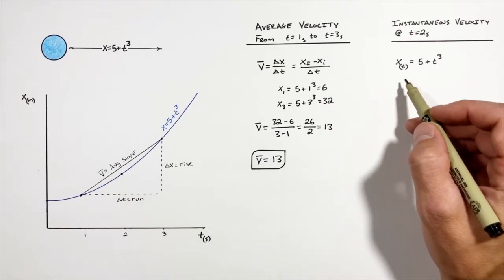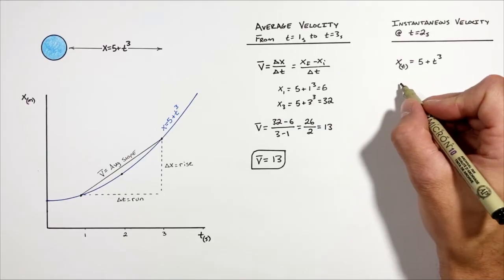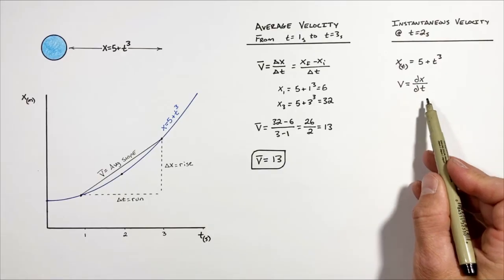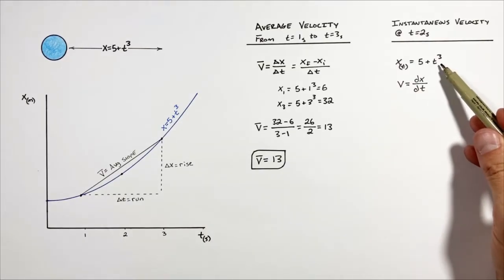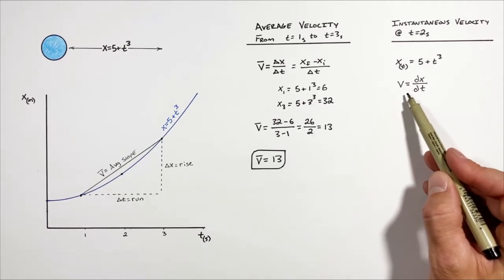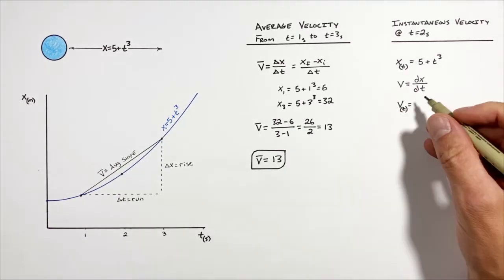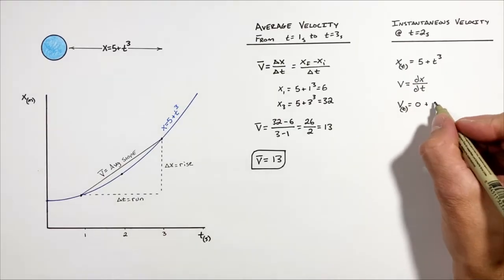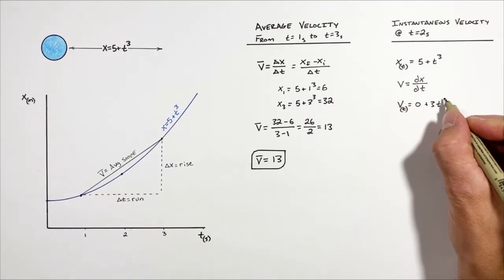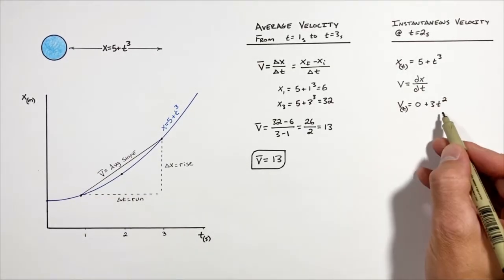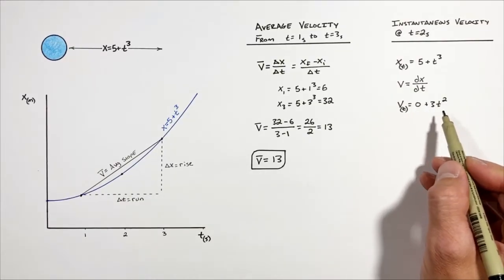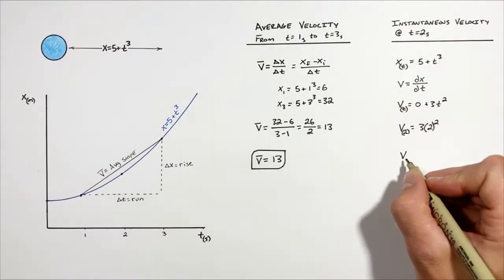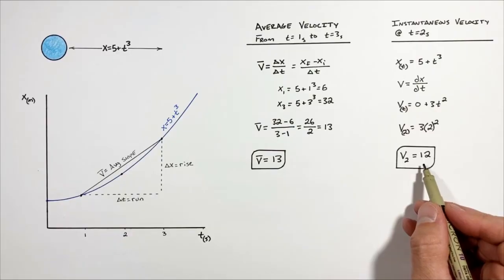When relating position to velocity in physics and calculus, the velocity is given by the derivative of position with respect to time. So we're going to take the derivative of this position function, which will give us a velocity function. Taking the derivative of the constant 5 with respect to t gives zero, plus the derivative of t cubed gives 3t squared. We now have a velocity function which we evaluate at t equals two seconds, and we find the velocity at two seconds is 12.